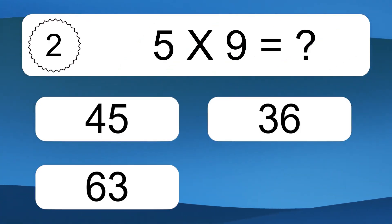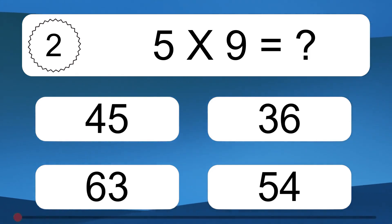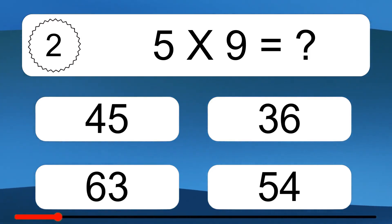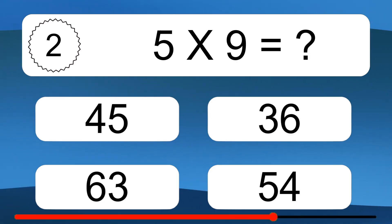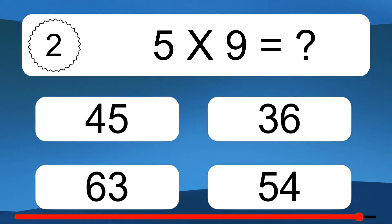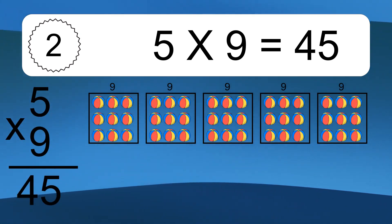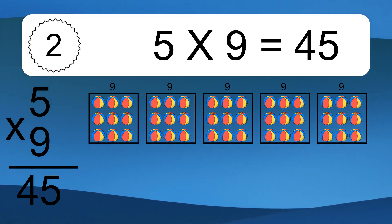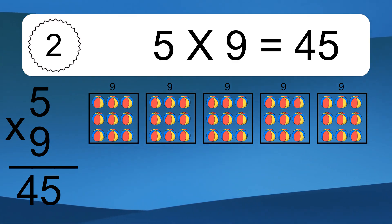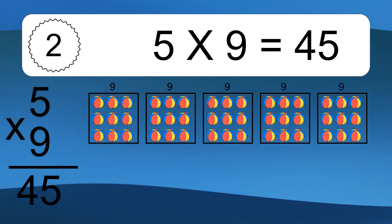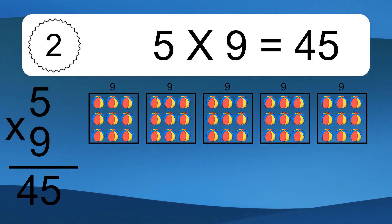5 times 9 equals what? 5 times 9 equals 45. We have 5 boxes and each box has 9 colorful balls inside. If you count all the balls in all the boxes together, you will have 5 times 9 balls. This equals 45 balls.